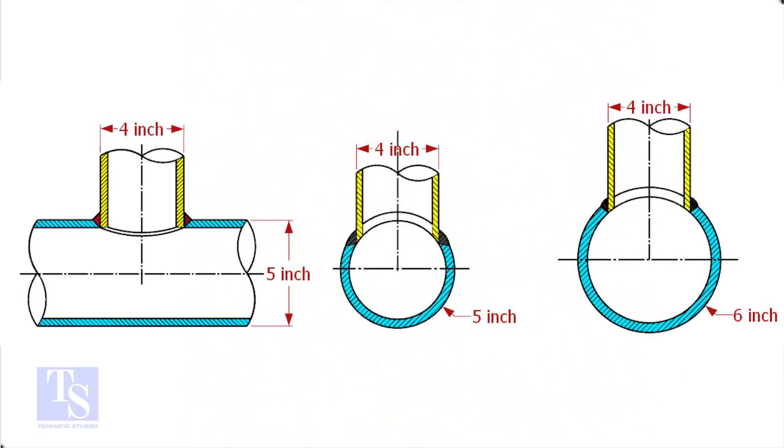In the case of stub-in connections, the branch pipe size is one or more units less than the header size. Suppose both the header and the branch size are the same, a stub-in connection is not possible.